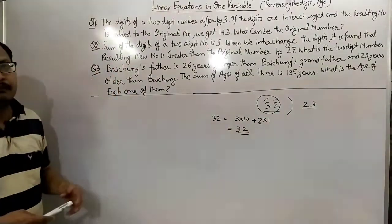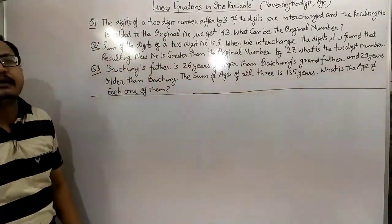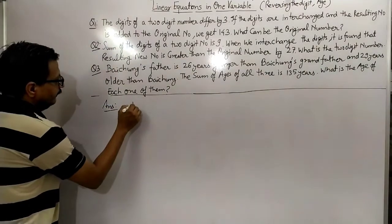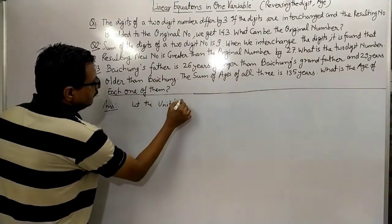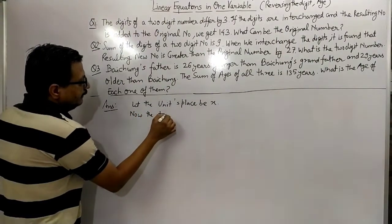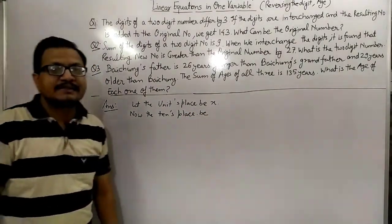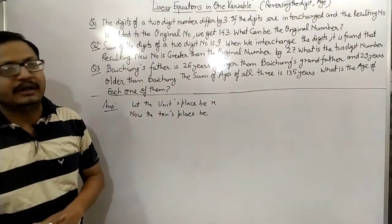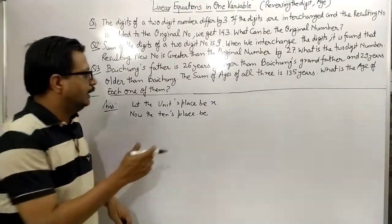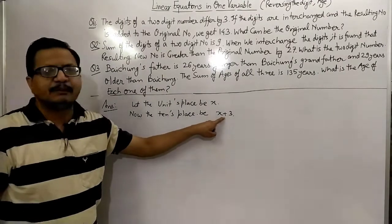Let's read the question again and then solve it. The digits of a two-digit number differ by three. Let the unit place digit be x. Now the tens place digit: since the difference between the two digits is 3, the tens place can be x minus 3 or x plus 3. So the tens place digit can be either x + 3 or x − 3.